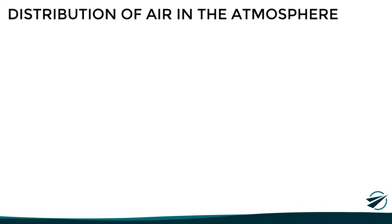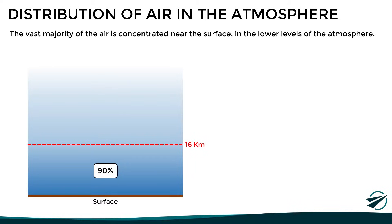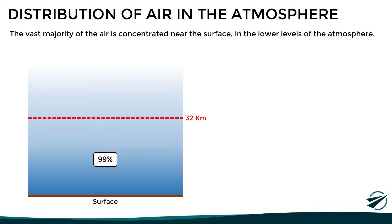An important property of air is that it is a compressible fluid. This implies that due to the Earth's gravity, most of the air is concentrated near the surface, in the lower levels of the atmosphere. 50% of the air that constitutes the atmosphere is concentrated within the first 5 kilometers of altitude, 90% within the first 16 kilometers, and 99% of the air is below 32 kilometers of altitude.